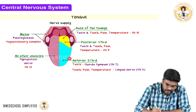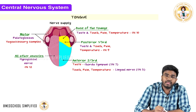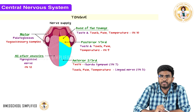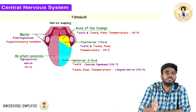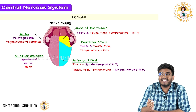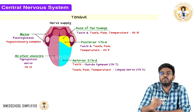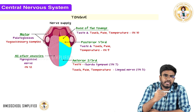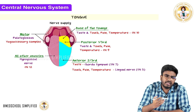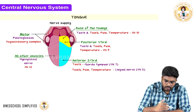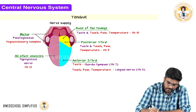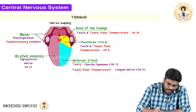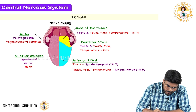Now let's talk about the sensory supply. We divide sensations into general sensations — touch, pain, temperature — and special sensation, which is taste. We also divide the tongue into three regions: the anterior two-thirds, posterior one-third, and the base of the tongue.